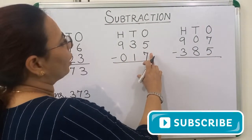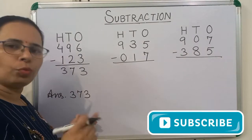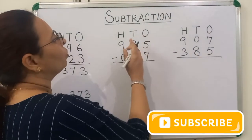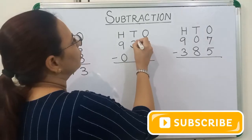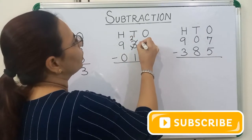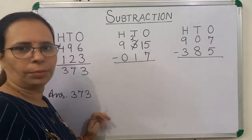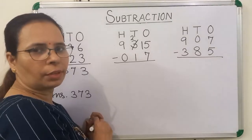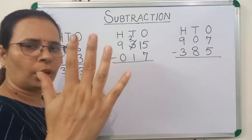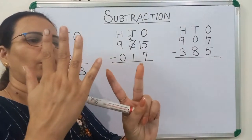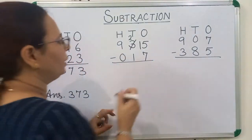We will subtract 7 from 5. It is not possible. So what we will do? We will borrow from next number. So next number is 3. 3 becomes 2 and 5 becomes 15. We will subtract 7 from 15. So what comes after 7? 8, 9, 10, 11, 12, 13, 14, 15. So how many fingers are out? 8. We will write here 8.